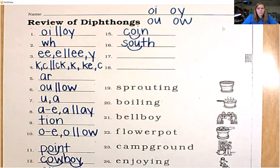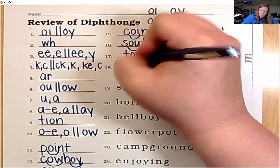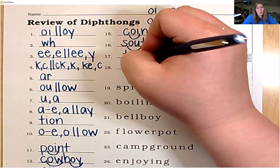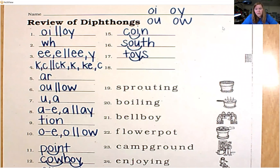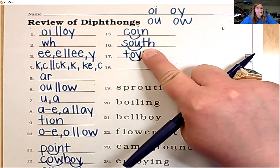Number 17, let's spell the word toys. The root word is toy, T-O-Y. But we want this to say toys, so we need to add S at the end. The oy sound is in the medial position, but S is a suffix — so in the root word, oy is at the end.